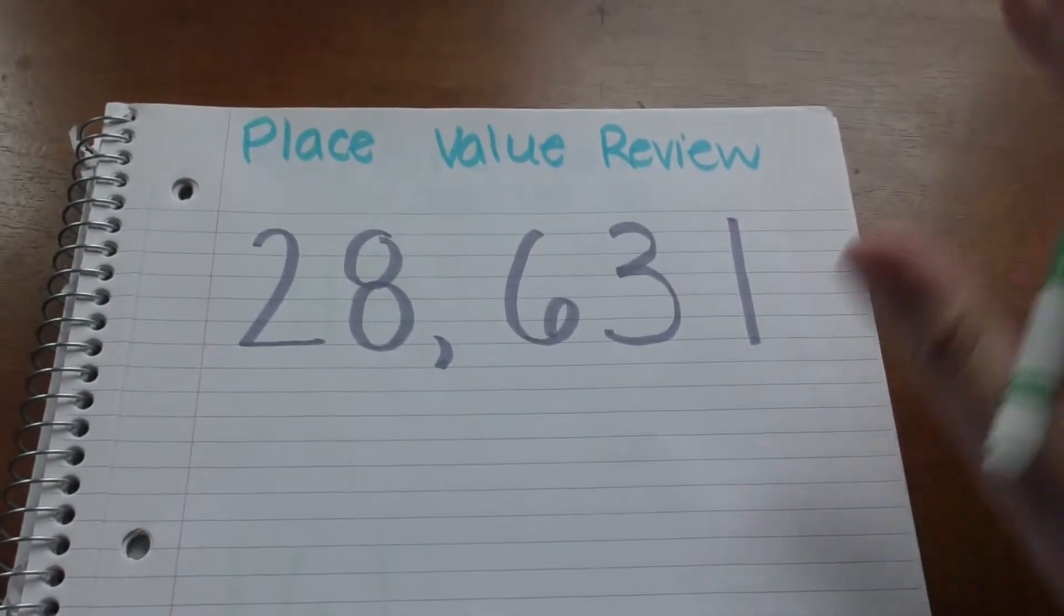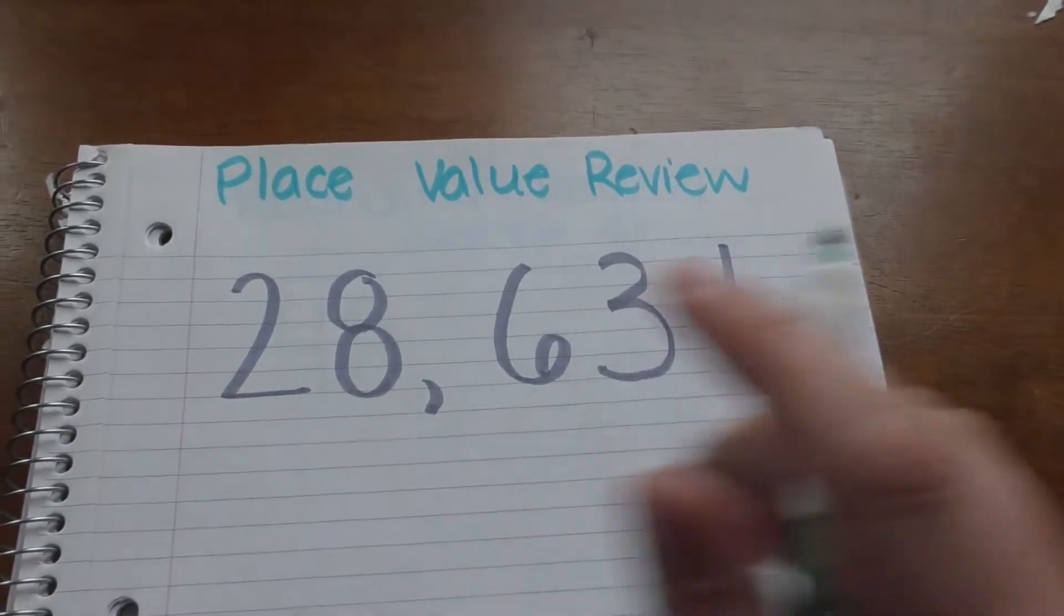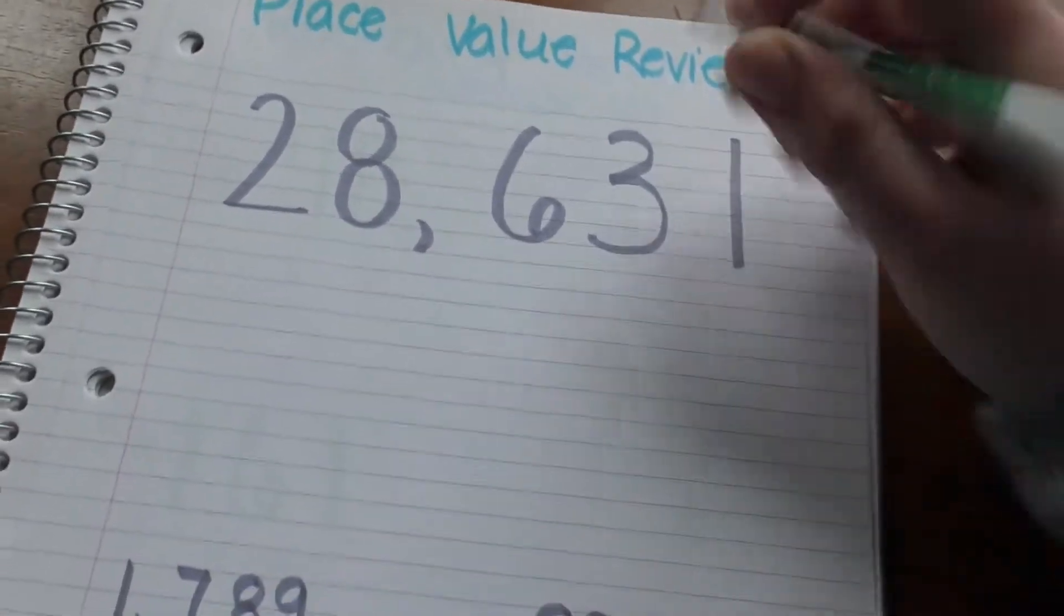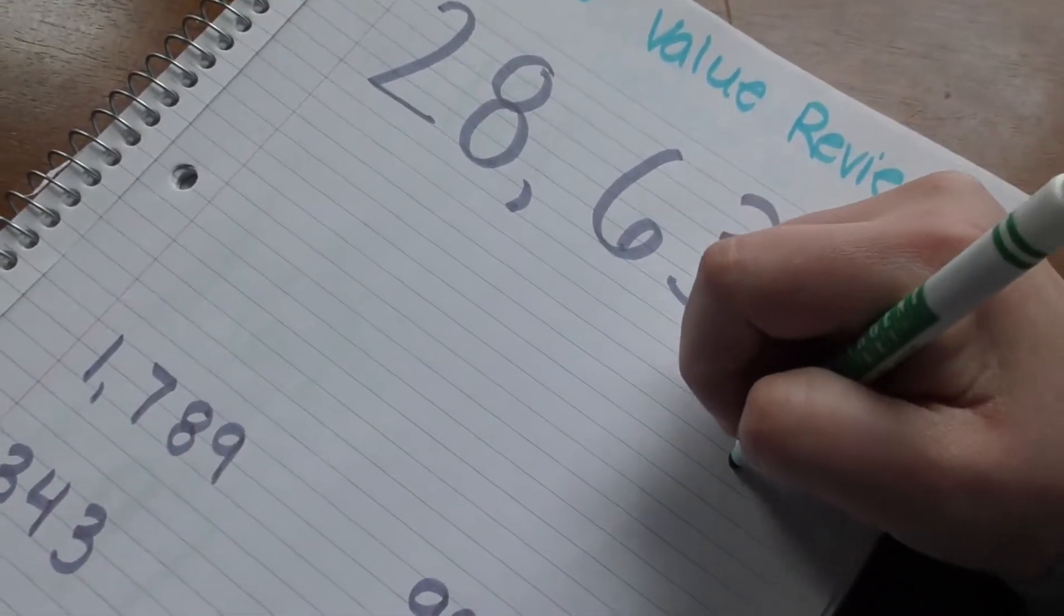So what we're gonna do is say we're just gonna label the place value of each one of these numbers. The one is in the ones place. So I'm gonna turn it this way and write ones place.